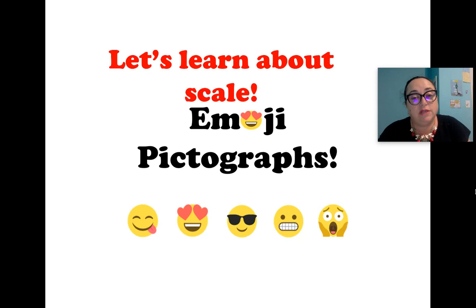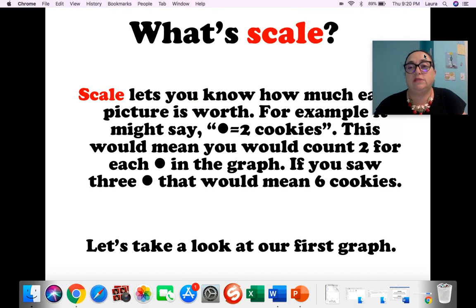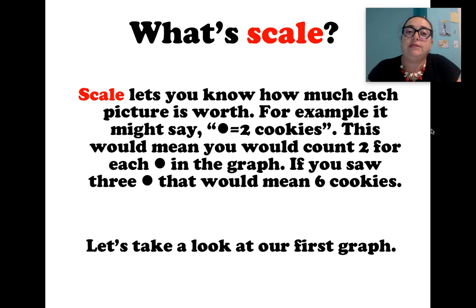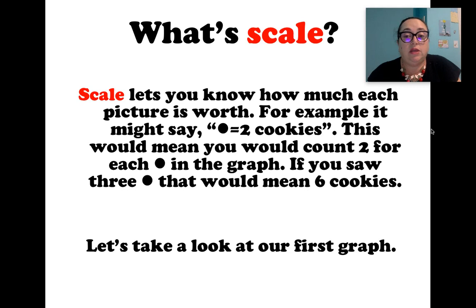So first of all we need to know what scale is. When I say scale you might be thinking we're weighing stuff. Well actually, scale lets you know how much each picture is worth in a pictograph — or it could be for a map or anything else showing data. For this example, it might say: black circle equals two cookies. That means you count two for each black circle. So if you saw three black circles, you'd count two, four, six — or two times three — and that would mean six cookies.